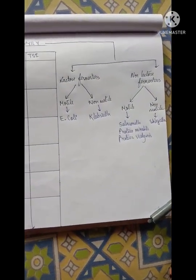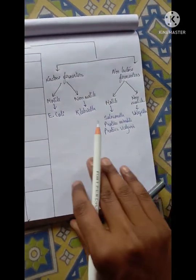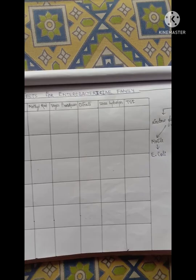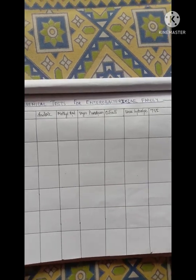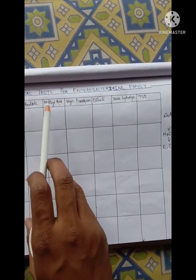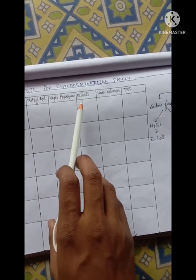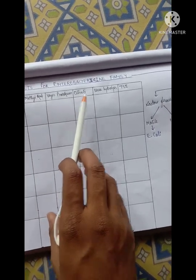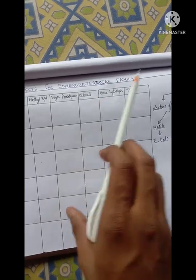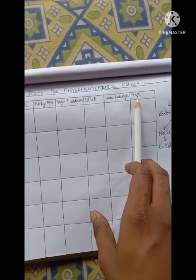We will be studying the biochemical tests for all these bacteria. The biochemical tests are: first, the Indole test; second, Methyl Red; third, Voges-Proskauer; fourth, Citrate utilization; fifth, Urea hydrolysis — also known as the Urease test; and sixth, the Triple Sugar Iron test, or TSI test.